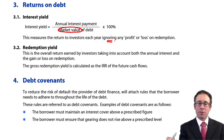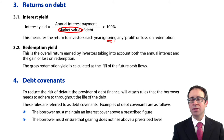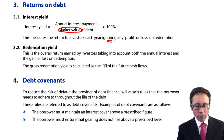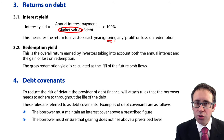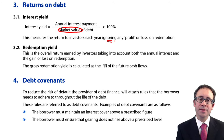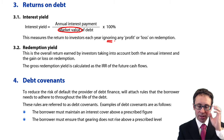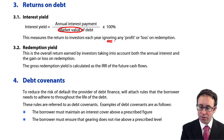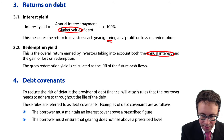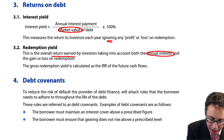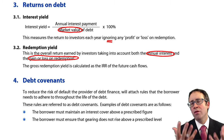That's where we look at the redemption yield — sometimes referred to as the gross redemption yield, or sometimes as the yield to maturity, YTM. Just be aware of the terminology. What this does is take account of both the annual interest and the gain or loss on redemption.